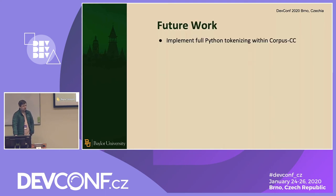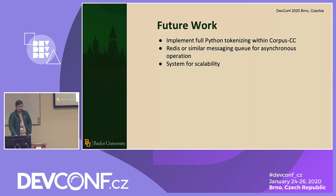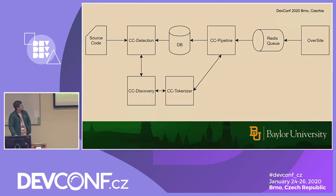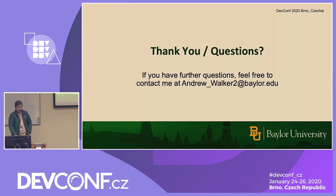Some future work: we want to do Python, which is currently ongoing and about halfway there. We want Redis or a similar messaging queue to connect the microservices and the scraper to make it a more asynchronous pipeline. We also want it to be more scalable for those requests, because the comparison is pretty time-intensive — comparing an entire application to a repository of millions of snippets is a lot. We want to parallelize that and scale as needed. We got funding from NSF, so they require us to put in that acknowledgement.